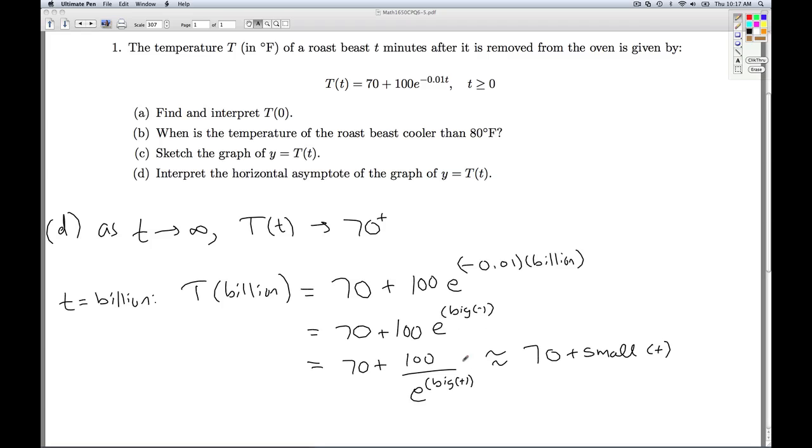So we saw it graphically. Here's the number sense that backs it up. Well, what does it mean? Well, it means that as time goes by, the roast beast will cool to 70 degrees Fahrenheit, which is ostensibly the room temperature. Even though in our model it never actually reaches 70 degrees, the 70 degrees is the limiting temperature of the roast beast. Alright, so that'll do it for part d.